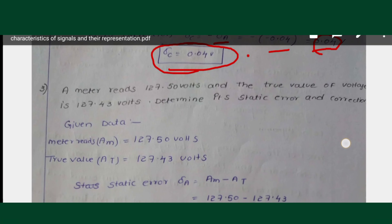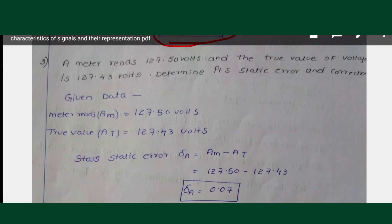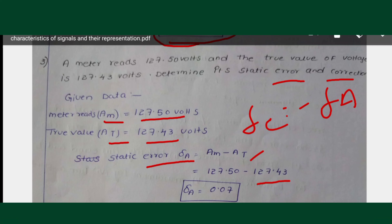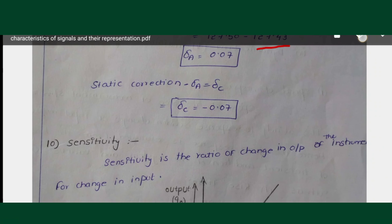Another example: A meter reads am = 127.50 V and the true value at = 127.43 V. Static error: Δa = am − at = 127.50 − 127.43 = 0.07 V. Static correction: Δc = −Δa = −0.07 V.